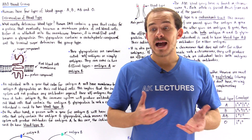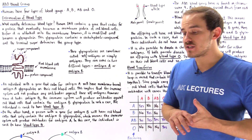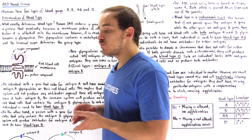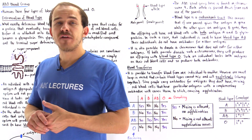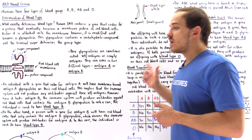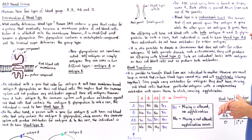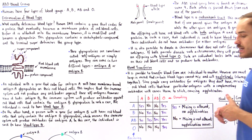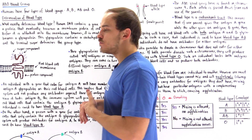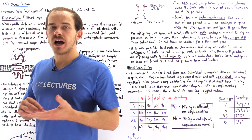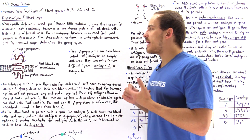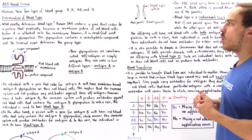Now that we discussed how our immune system actually works, let's discuss the types of blood groups or blood types found in humans, and then let's briefly discuss the process of blood transfusion. Humans contain four different types of blood groups: blood type A, blood type B, blood type AB, or blood type O.